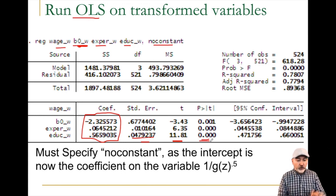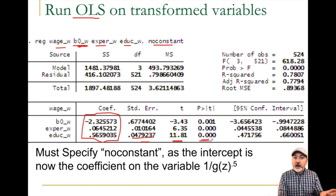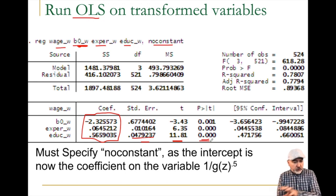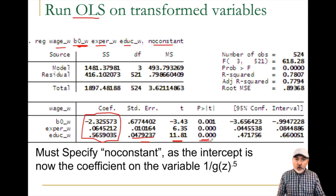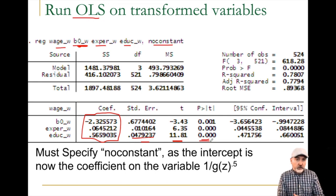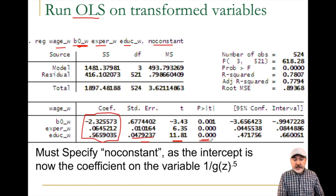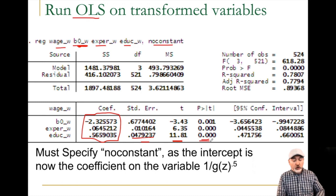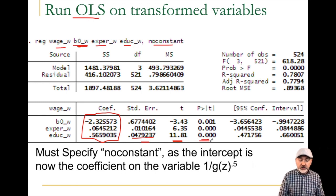These are now our weighted least squares coefficients, interpreted as the change in y over the change in x like we always do. If we got this right, our standard errors, t-stats, and p-values will be correctly calculated and no longer subject to the problem of heteroscedasticity. In real life this turns into a trial-and-error process — based on our test we use different versions of that variable as a weight, retest each weighted least squares model, and hopefully find one that passes the test.